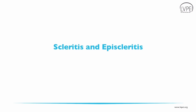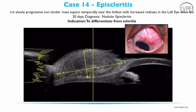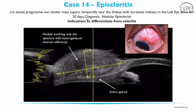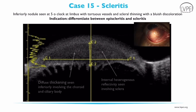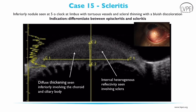UBM finds clinical importance in cases of scleritis as well as episcleritis. This patient presented with a slowly progressive, non-tender mass superior-temporally near the limbus with increased redness in the left eye. UBM helped in confirming the diagnosis as nodular episcleritis, clearly showing the nodule involving only the episclera with heterogeneous internal reflectivity while the sclera was spared. Another patient presented with an inferior nodule at 5 o'clock at the limbus with tortuous vessels and scleral thinning. UBM showed diffuse thickening involving the choroid and ciliary body along with internal heterogeneous reflectivity involving the sclera, thereby diagnosing scleritis.